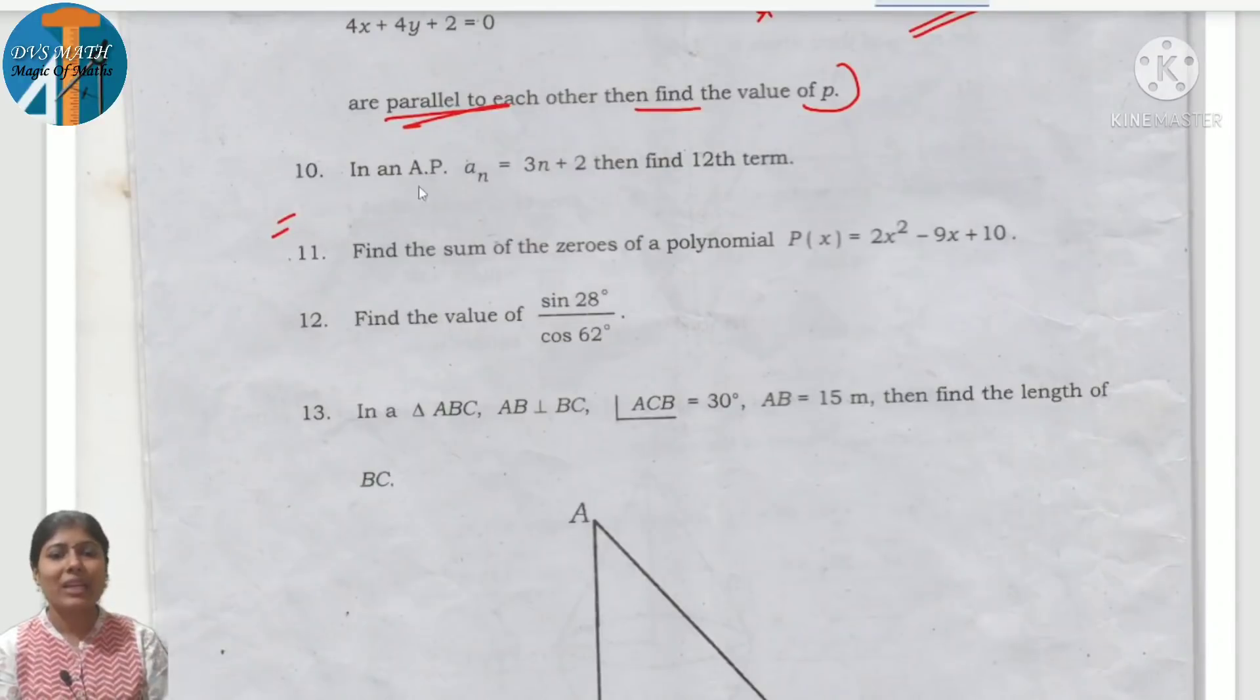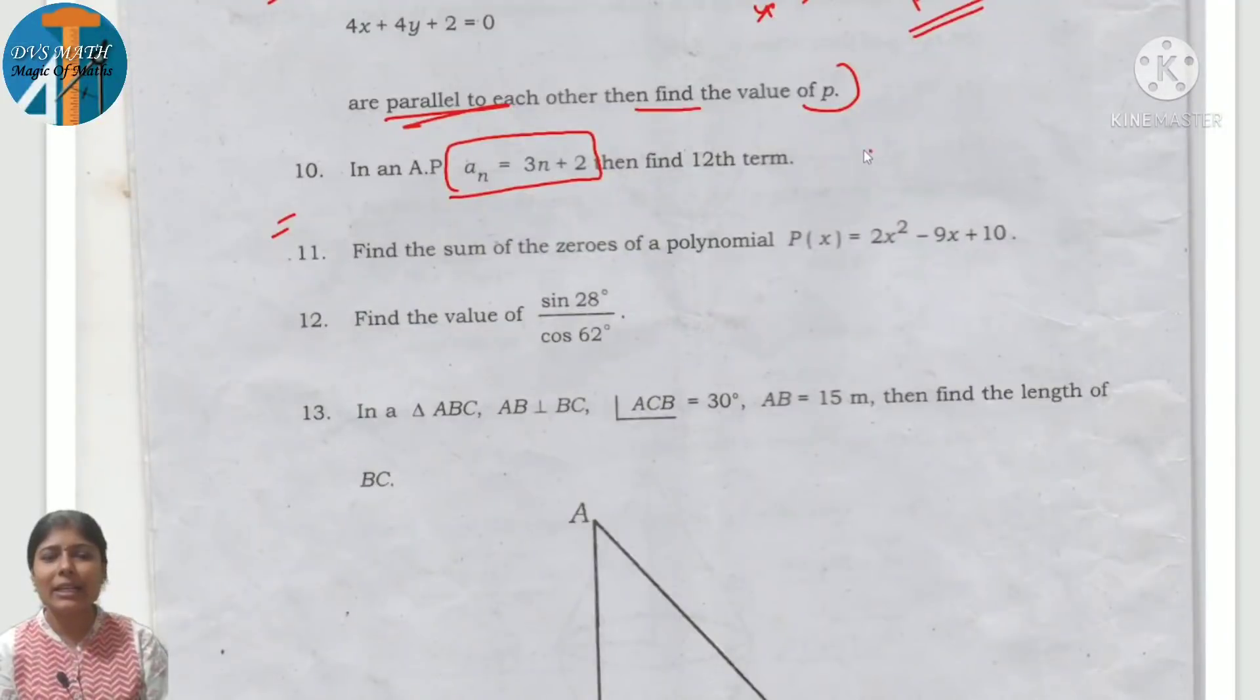10th question: in AP, the nth term is given. 12th term: an is equal to 3n plus 2. Put n equals 12: 3 times 12 plus 2, which is equal to 38.